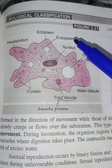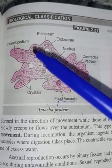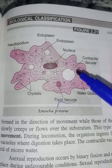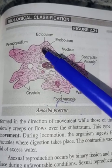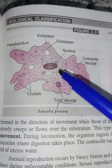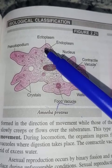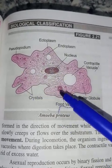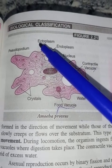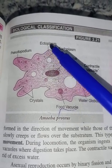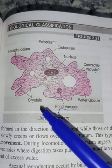The cytoplasm includes ectoplasm and endoplasm — both are types of protoplasm. The endoplasm is the protoplasm present towards the inner side, while the ectoplasm is the protoplasm present towards the peripheral part of the cell.